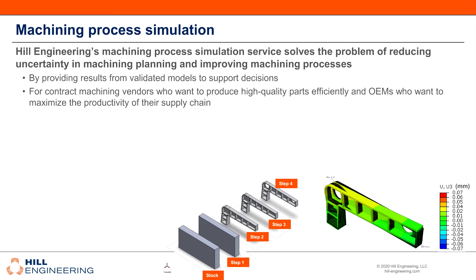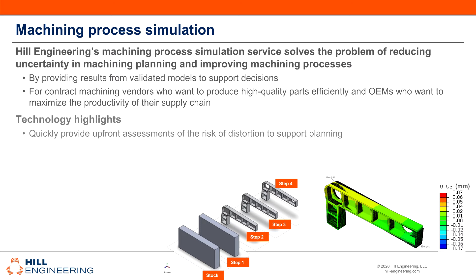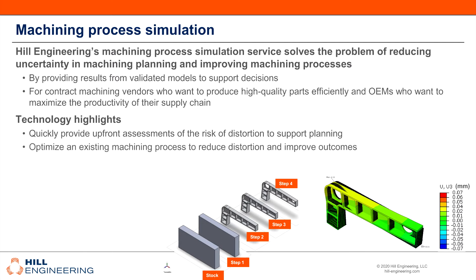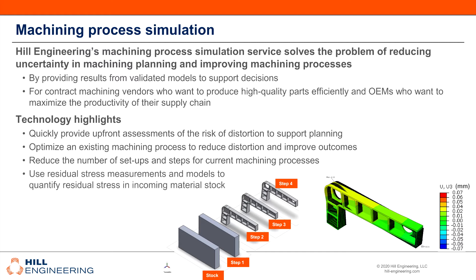Hill Engineering's machining process simulation services can help reduce uncertainty in machining planning and improve machining processes. There are a number of ways that our technology can help, including quickly providing upfront assessments of the risk of distortion, optimizing an existing machining process to reduce distortion and improve outcomes, also reducing the number of setups and steps for current machining processes, and quantifying residual stress in incoming material stock as well.